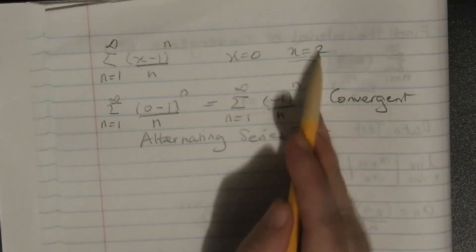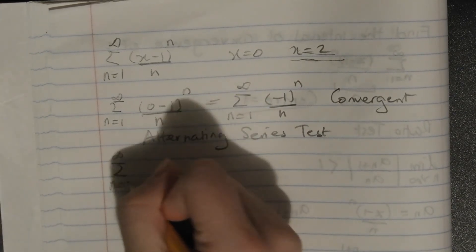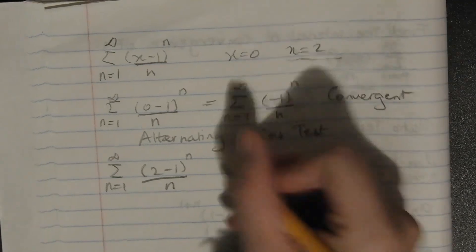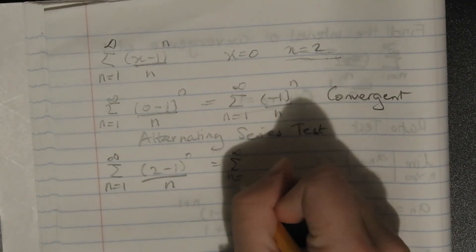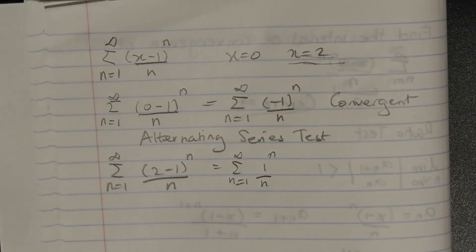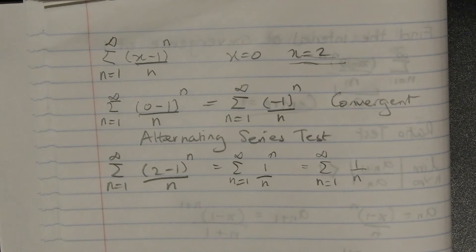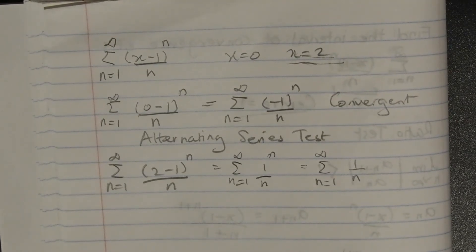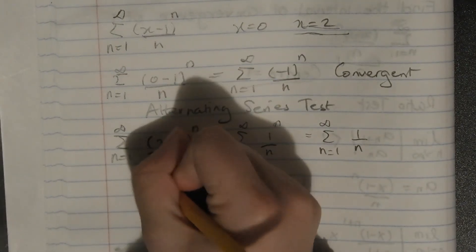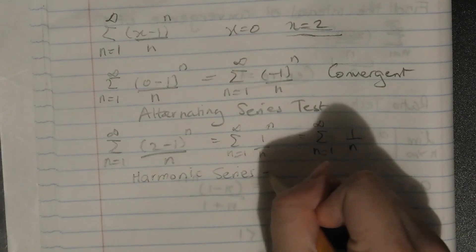Now we test x equals 2. We get the sum from n equals 1 to infinity of (2 minus 1) to the n on n, which equals the sum of 1 to the n on n. Since 1 to the power of anything is just 1, this becomes the sum of 1 on n — the harmonic series. This is a key series to remember if you're studying series. The harmonic series is divergent.